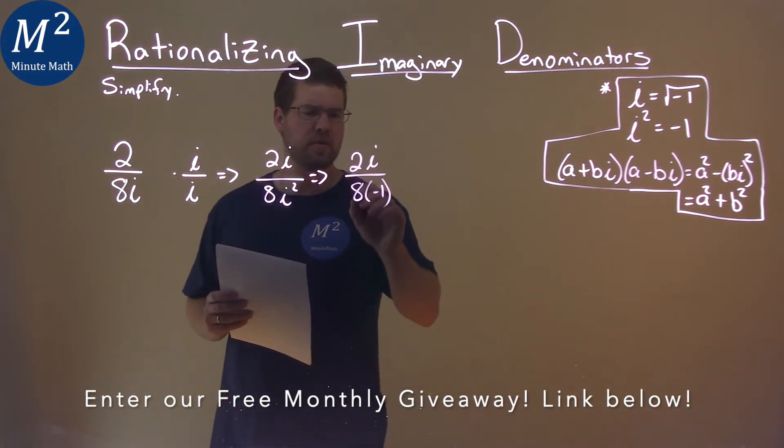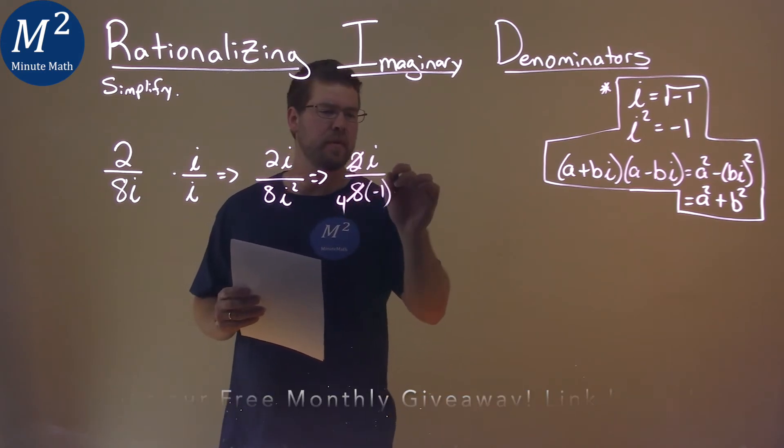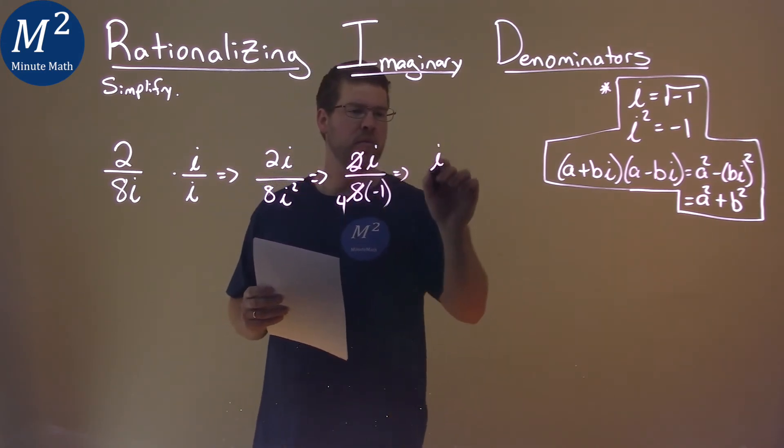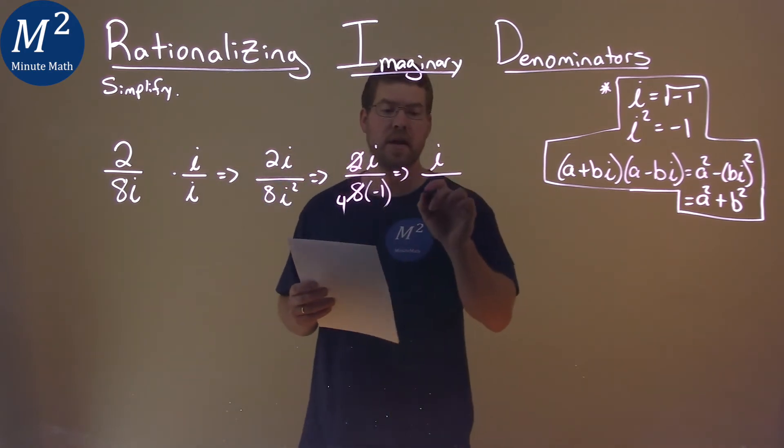2 and 8, well, 2 goes in 8 four times. So we have 4 right here. And then, i is in the numerator, denominator 4 times negative 1 is negative 4.